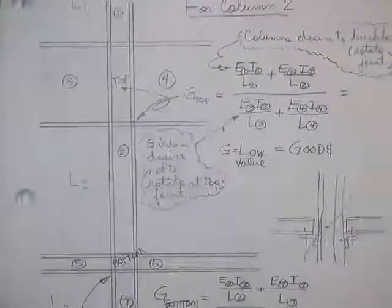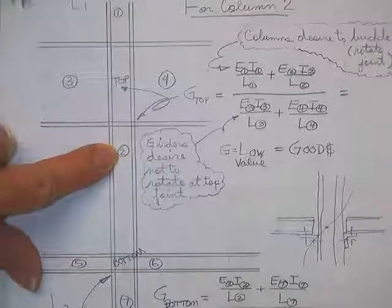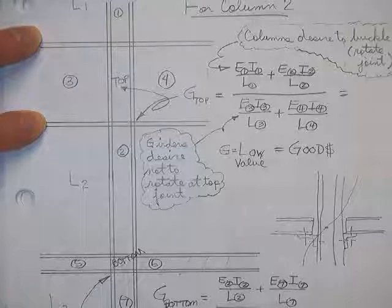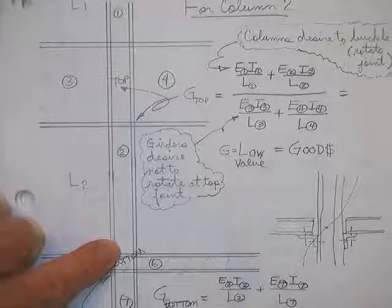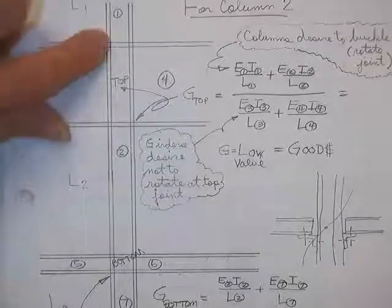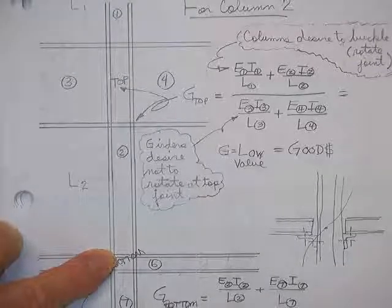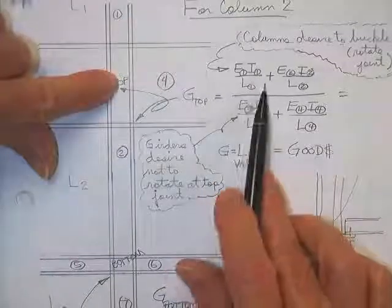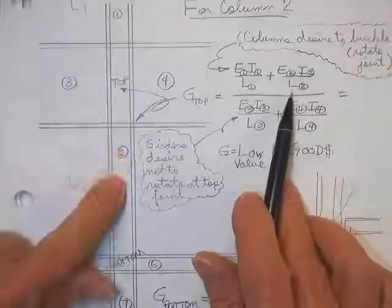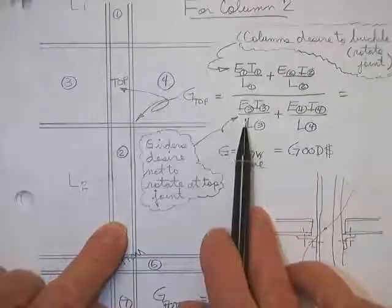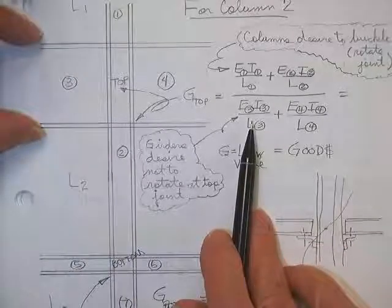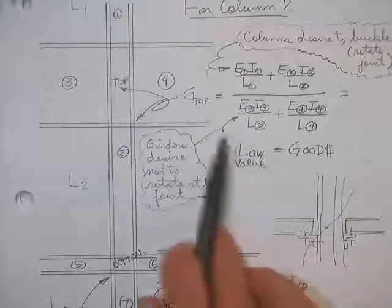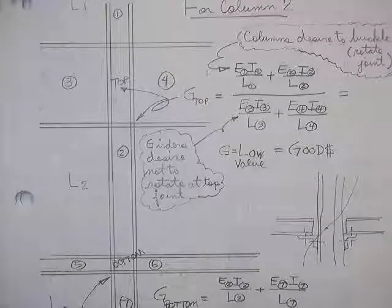Here's an example. Looking at column number 2 — there's a massive girder at this floor level, maybe due to large loads, even though those loads could be transmitted through a relatively small column. For the EI/L of the bad guys at the top, I'd get large numbers in the denominator because the girder's moment of inertia is much larger. Low G values are good, and I'll show you the alignment chart we're going to use.